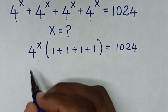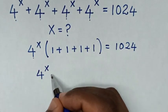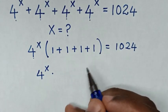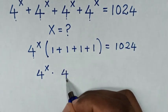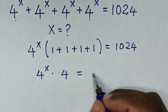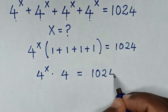In the next step, we have 4 power of x times 1 plus 1 plus 1 plus 1, which is 4, is equal to 1024.